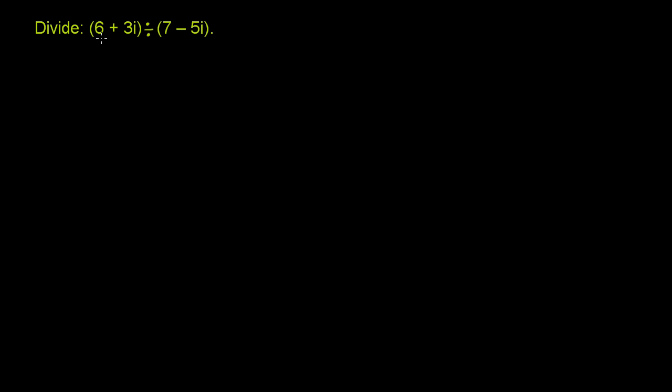We're asked to divide, and we're dividing 6 plus 3i by 7 minus 5i. And in particular, when I divide this, I want to get another complex number. So I want to get something, some real number plus some imaginary number, so some multiple of i's. So let's think about how we can do this.